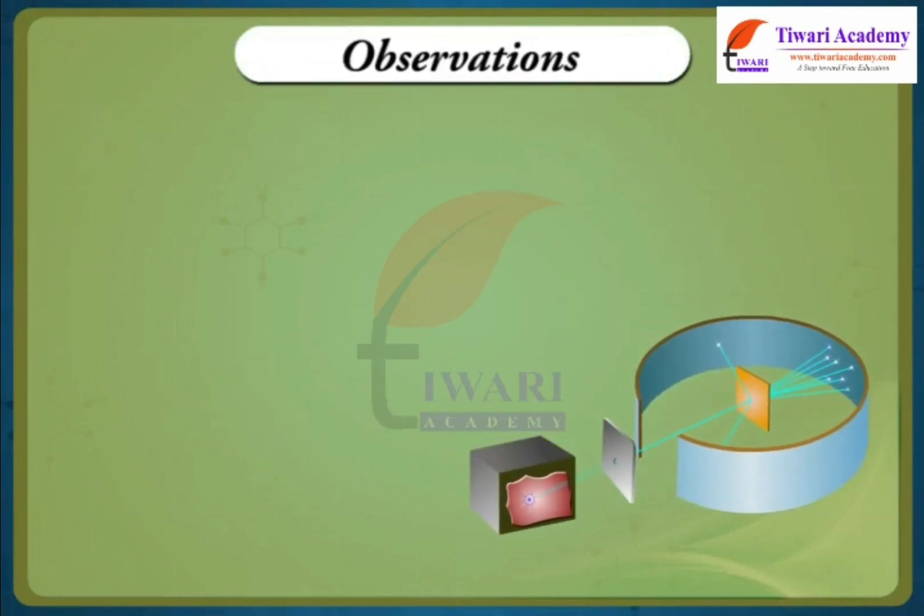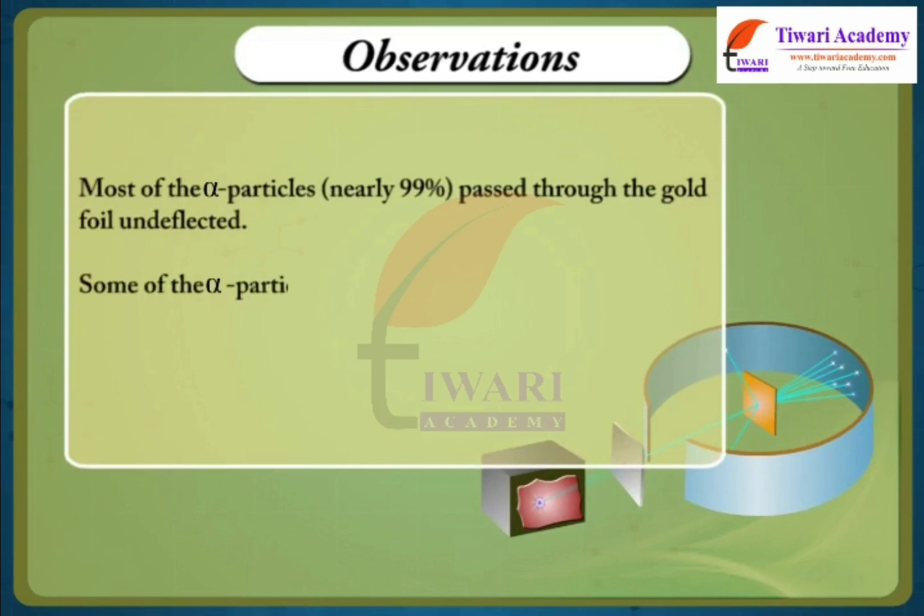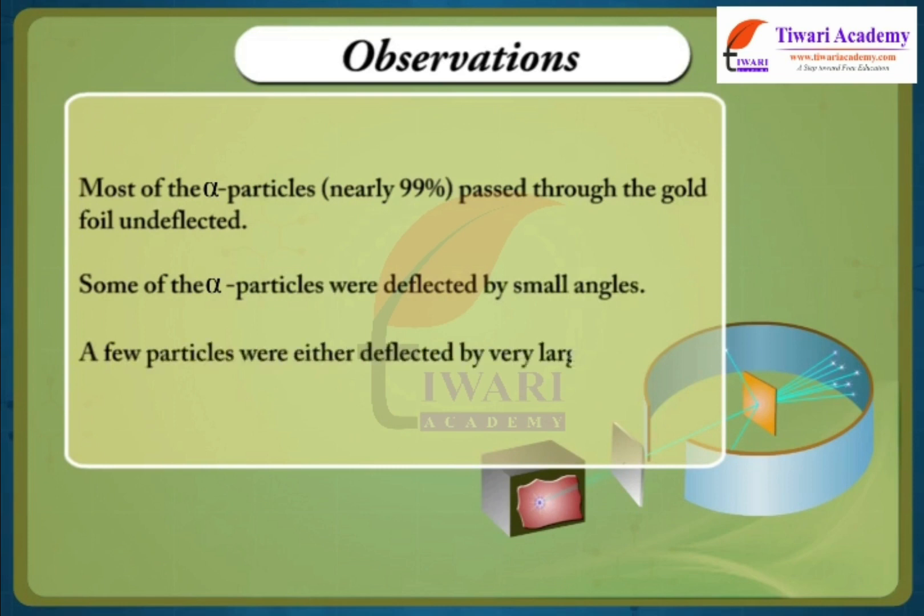Observations. Most of the alpha particles, nearly 99%, passed through the gold foil undeflected. Some of the alpha particles were deflected by small angles. A few particles were either deflected by very large angles or were actually reflected back along their path.